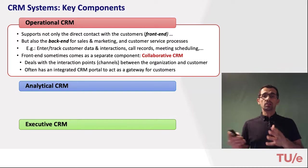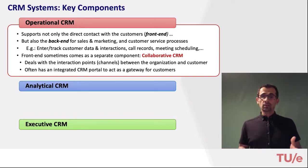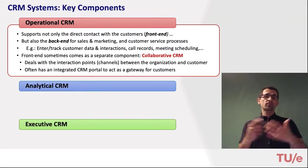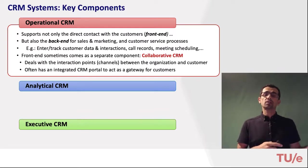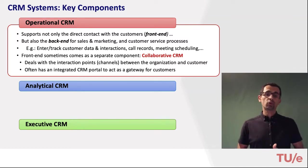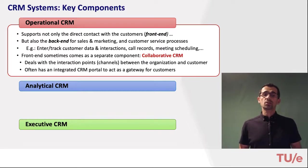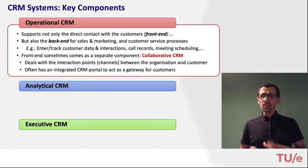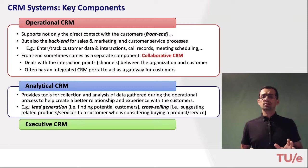These interaction points are referred to as channels. Common channels include phones, online chats, and emails. Collaborative CRM often integrates these channels via an integrated CRM portal that provides a gateway for customers to access information and interact electronically with the company.